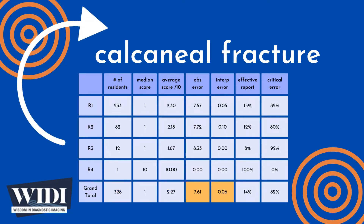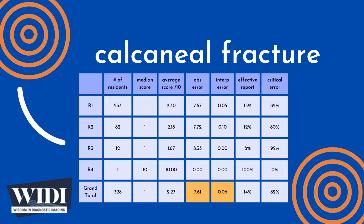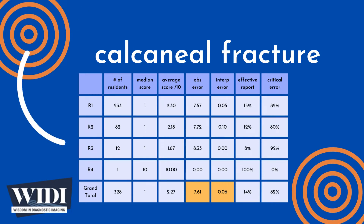Overall, the average number of points lost out of 10 due to observational discipline was 7.61. At the same time, 0.06 points were lost due to interpretive errors on the part of the residents.